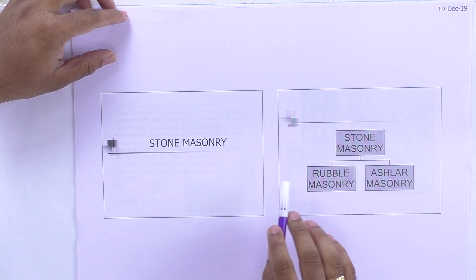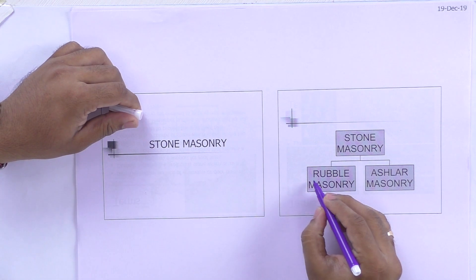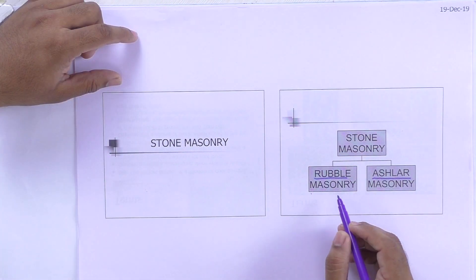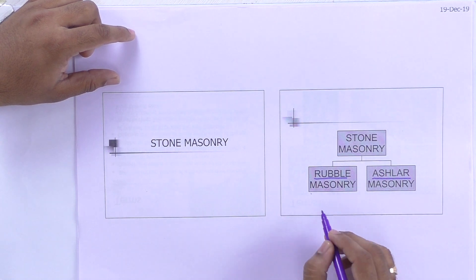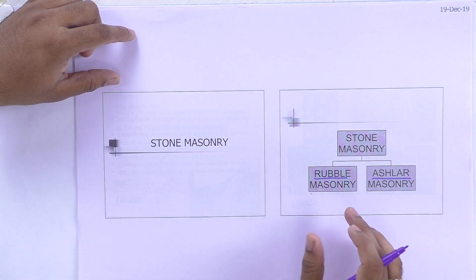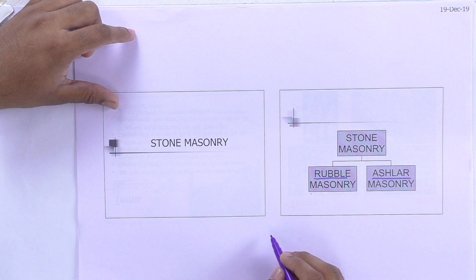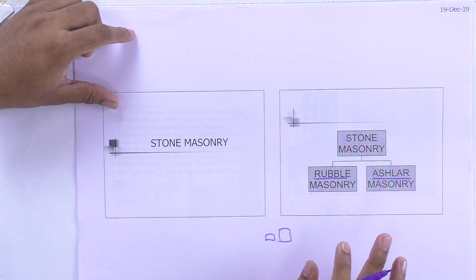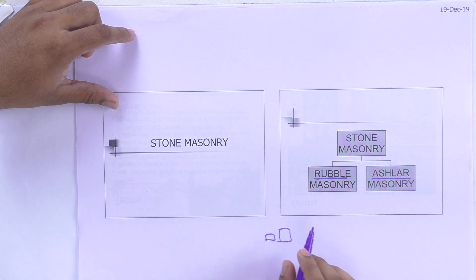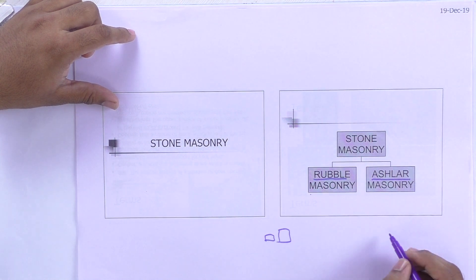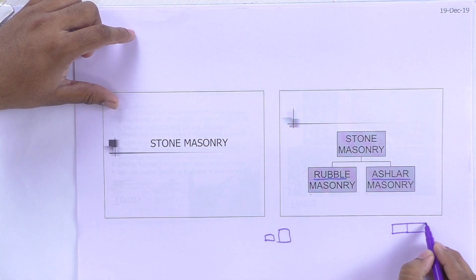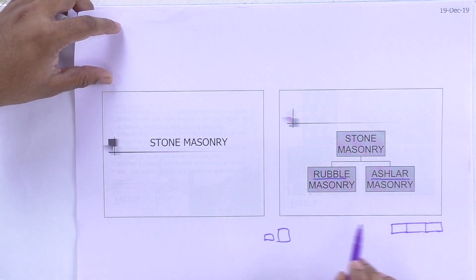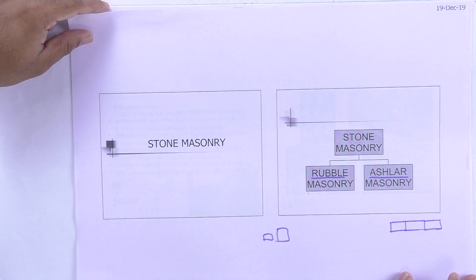Next topic is stone masonry. In stone masonry we subdivide into two types: rubble masonry and ashlar masonry. In rubble masonry, the stones are kept as they are obtained from nature — the sizes may vary, and we construct using those irregular-sized stones. In ashlar masonry, we use regular dimensions with stones of the same size. Before going into detail, there are certain terms used in stone masonry.